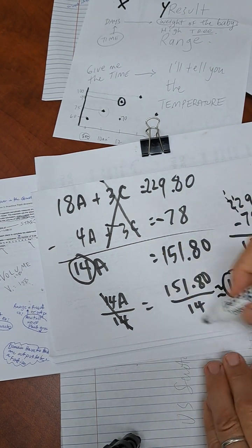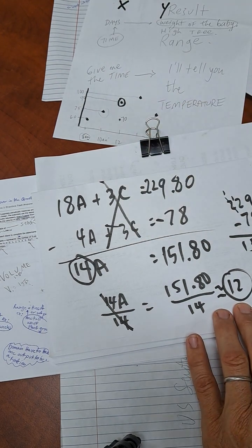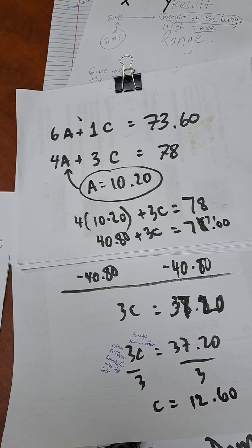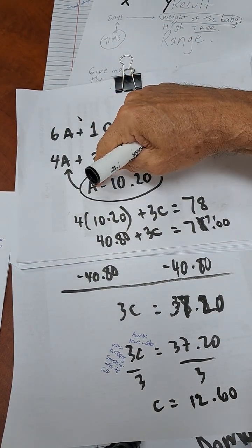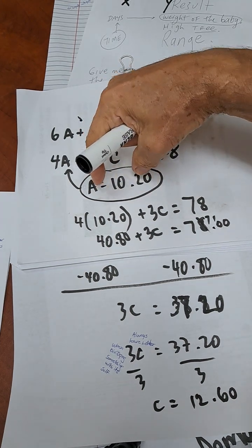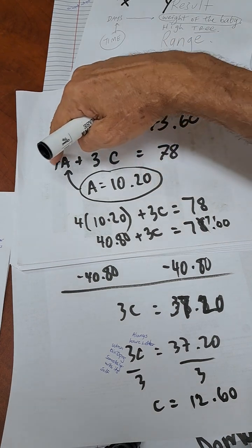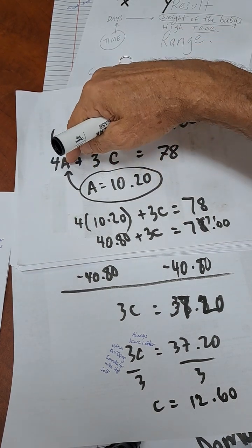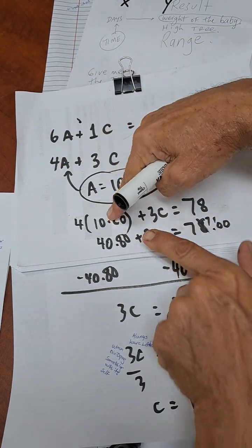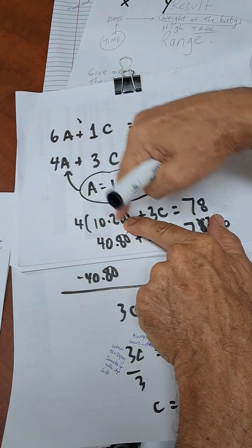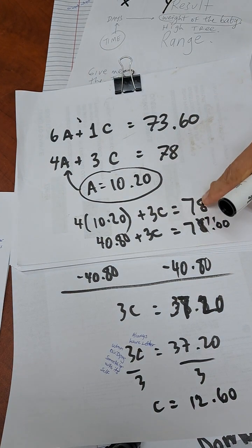And now you take this number and that 12, you plug it back in. So what we had found out, the first step was to find out how much the A is, the almonds. Now we take that value, about $10.20, plug it into one of these. Doesn't matter which. We're plugging it into one of the equations. The 10.20 goes in here. Multiply it by 4. So I got 40.80. Plus the 3C's equal to 78.